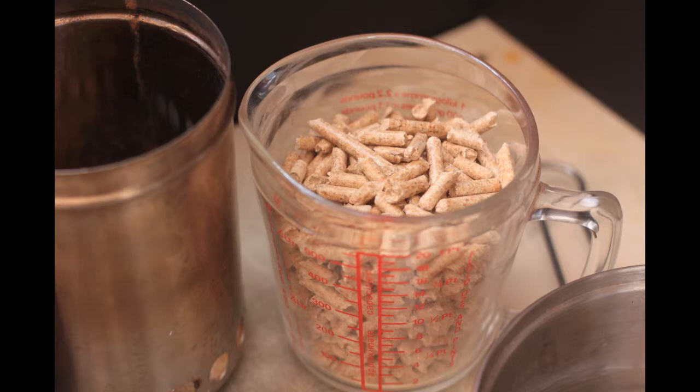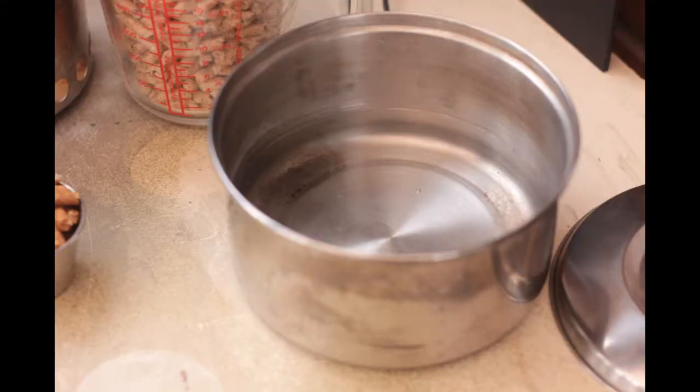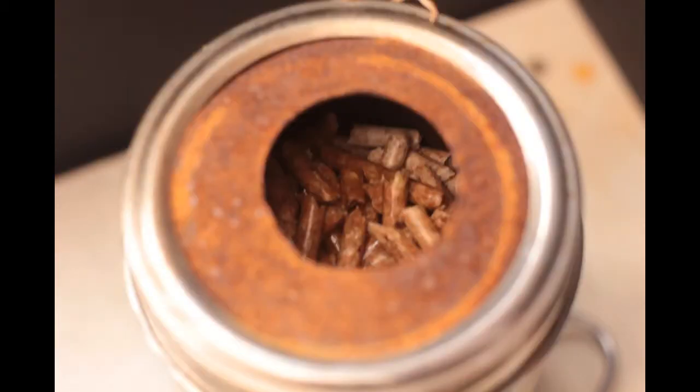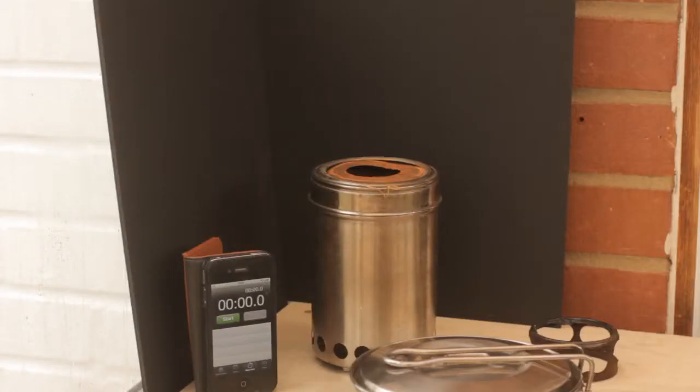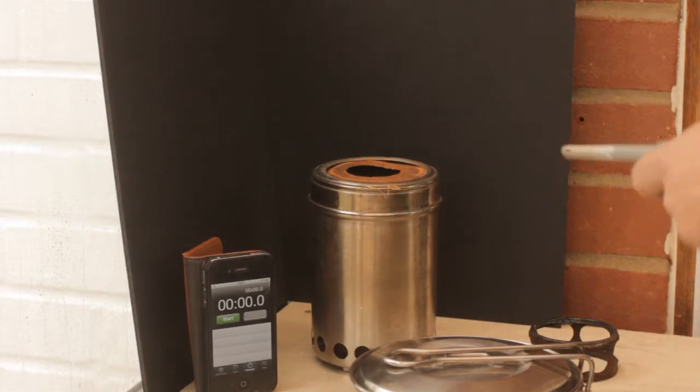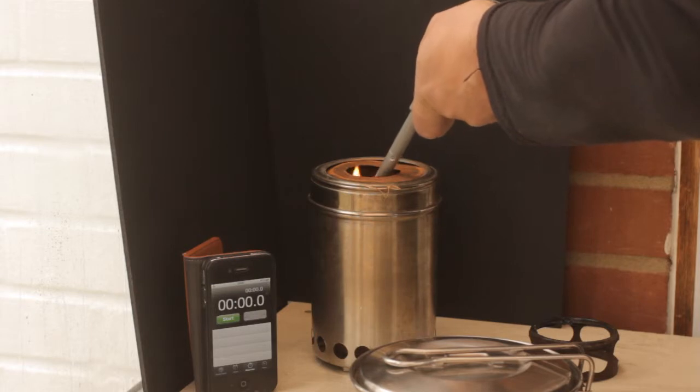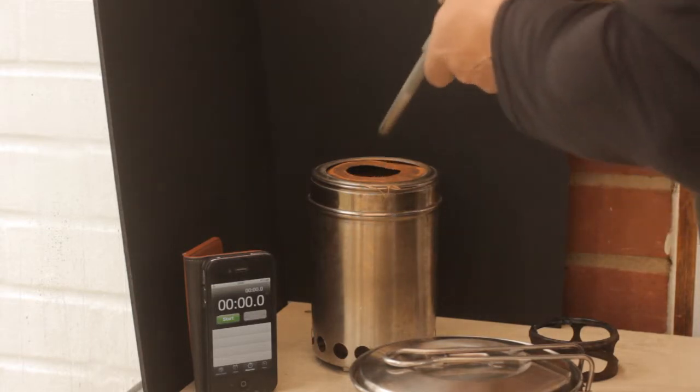Put two cups of water on for the boil, and then we're going to top it off with some cat litter that's been soaked with lighting gel and put the top on. There we are, and they'll be ready to light. Lights pretty much straight away. Very easy stuff.